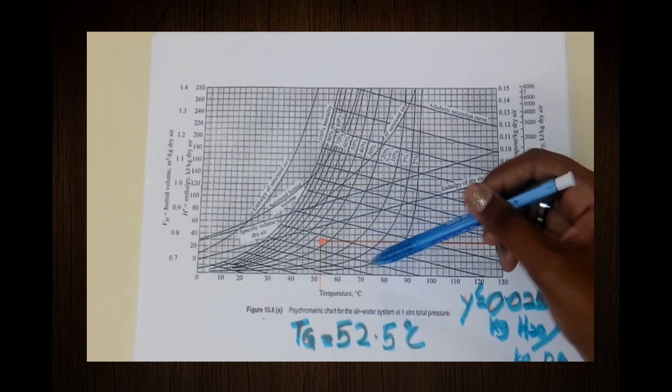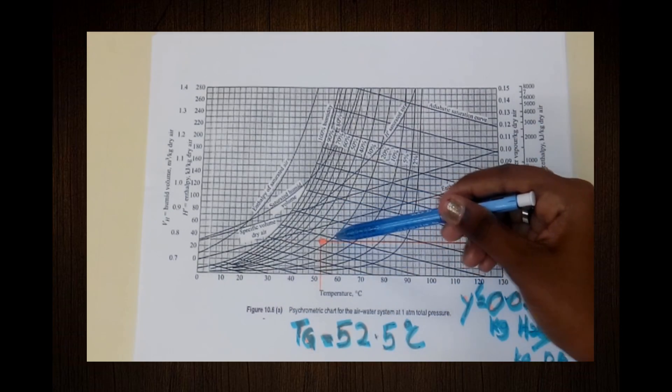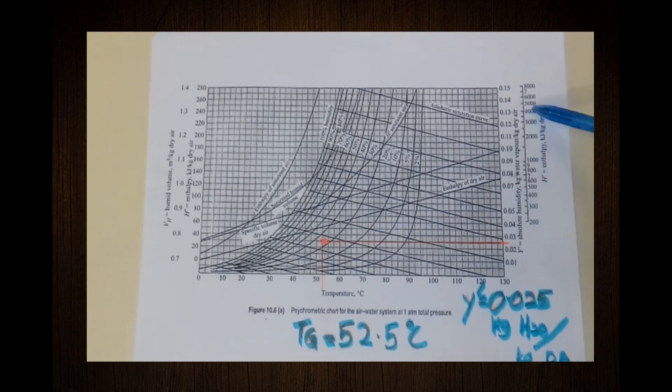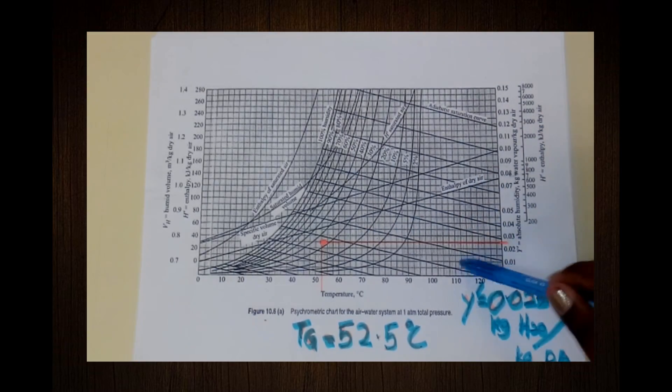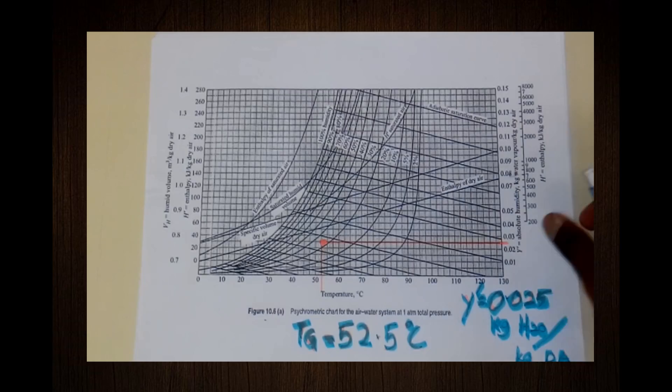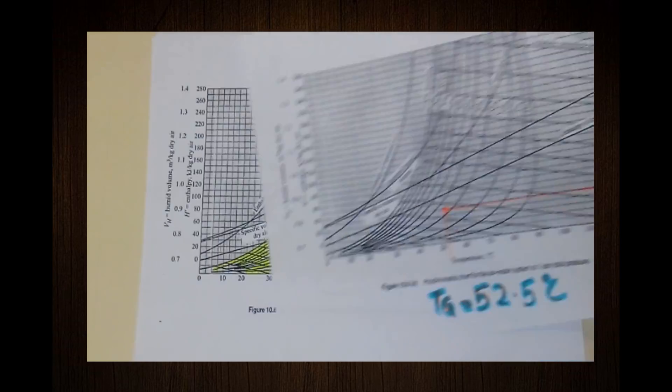Next, find the absolute humidity by drawing a straight line from the point to the absolute humidity axis. The absolute humidity for this point is 0.025 kilogram water per kilogram dry air. Now I will show you the relative humidity lines.